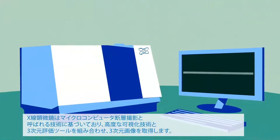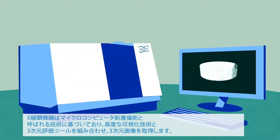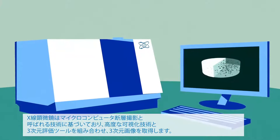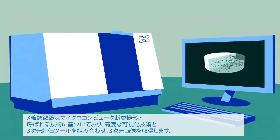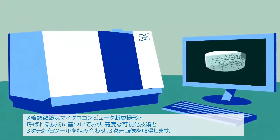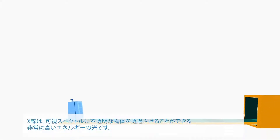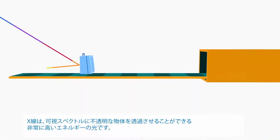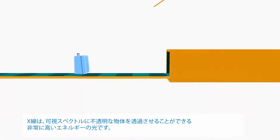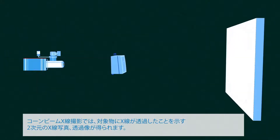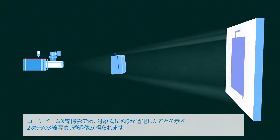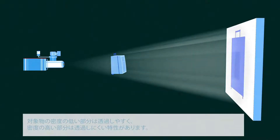Based on a technology called microcomputed tomography, XRM combines three-dimensional imaging with advanced visualization and 3D evaluation tools. X-ray radiation is a very high-energy light capable of penetrating objects that are opaque to the visible spectrum. Cone-beam X-ray imaging results in a two-dimensional radiograph, showing the transmission of X-rays through an object.